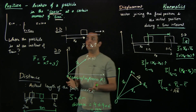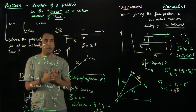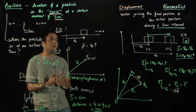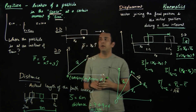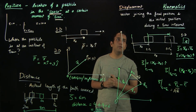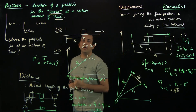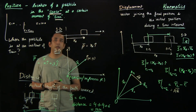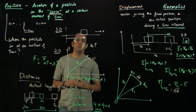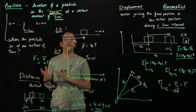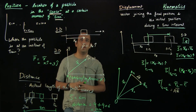In this video we defined position and displacement, related distance with displacement, and discussed the difference between an instant of time and an interval of time. In the next video we will cover two other quantities — velocity and acceleration — using the knowledge of position and displacement discussed here. Thank you.